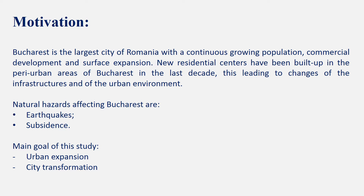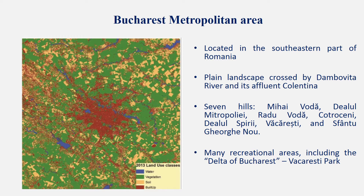The Bucharest metropolitan area is located in the southern part of Romania, in the Romanian plain along the Colentina and Dâmbovița rivers, in the central part of the Moesian subplate. Over the Cretaceous Neogen deposits, a Neogen shallow water deposit was settled. The surface geology consists mainly of Quaternary alluvial deposits with distinct peculiarities and a large interval of thickness.